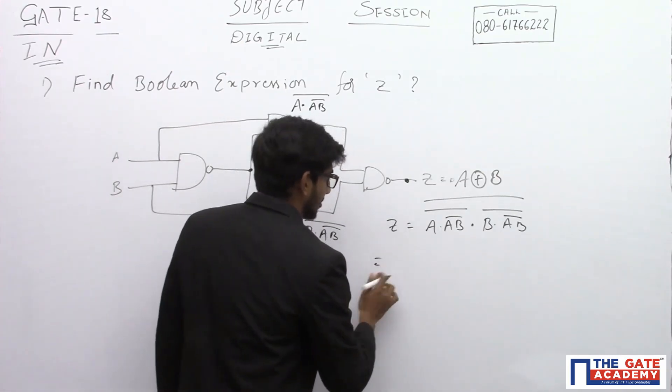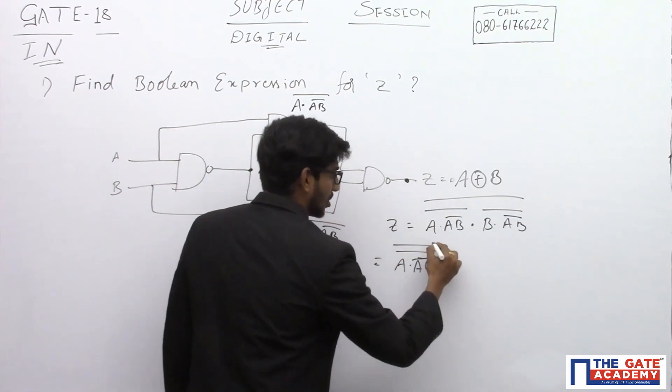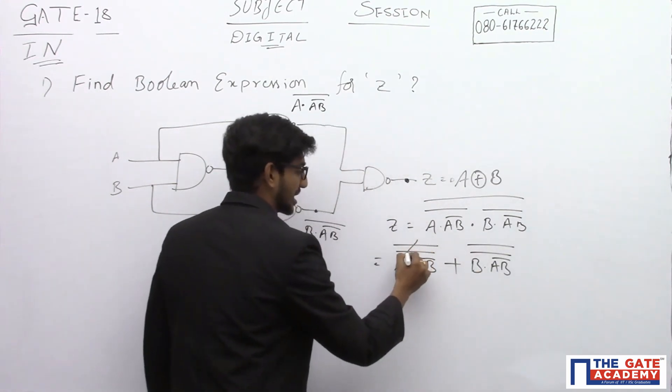Now, according to De Morgan's laws, whole bar, whole bar, plus B into A, B bar, whole bar, whole bar. Both get cancelled.